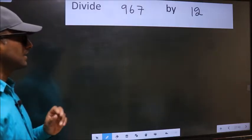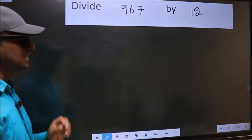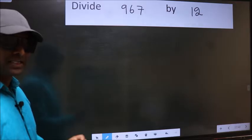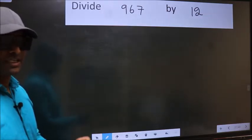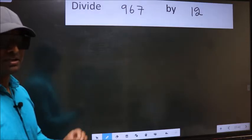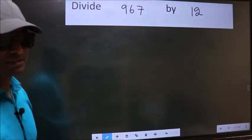Divide 967 by 12. While doing this division, many do this mistake. What is the mistake that they do? I will let you know. But before that, we should frame it in this way.